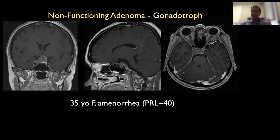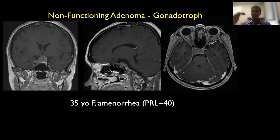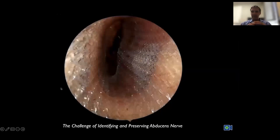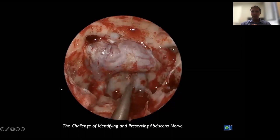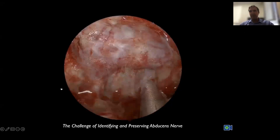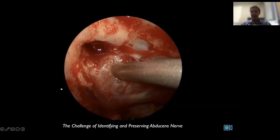Here is a non-functioning adenoma — a gonadotroph adenoma — with extension into the parasellar space and cavernous sinus. This patient presents with amenorrhea. Prolactin is 40, which is mildly elevated. This is not a prolactinoma — it's a larger tumor, so it's definitely a non-secretory tumor. We go directly to surgery because it's compressing the optic apparatus. We drill all the bone of the sella, expose the carotid artery — we use a Doppler to identify the carotid — and then remove the tumor. With a microscope you would not see laterally at all; with the endoscope we can see so well.